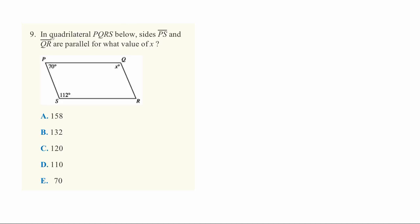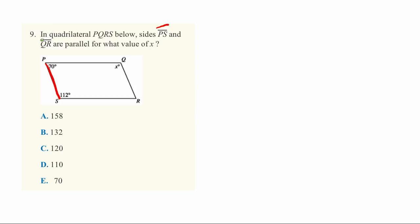Question 9 asks: in the quadrilateral PQRS below, sides PS and QR are parallel — for what value of X? Let's draw out exactly what they're asking. They're referring to side PS, which is the line segment between letters P and S, and QR, which is the line segment between Q and R.